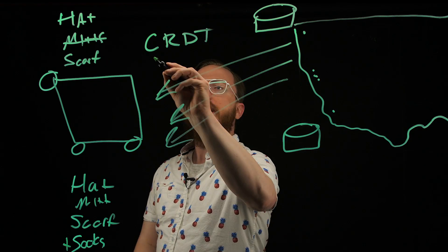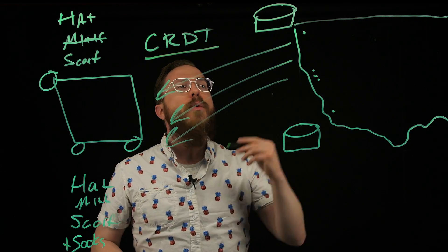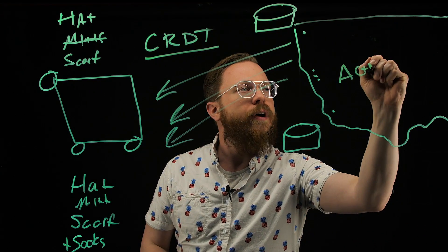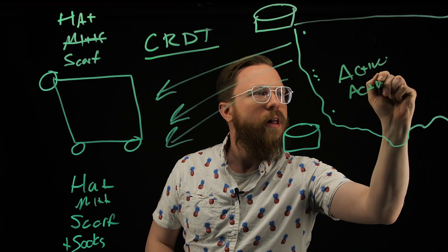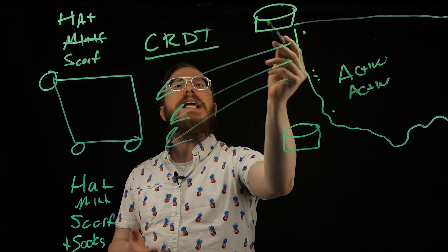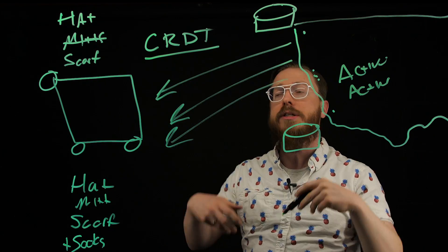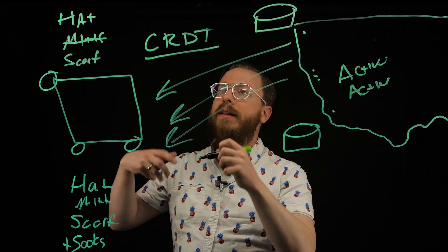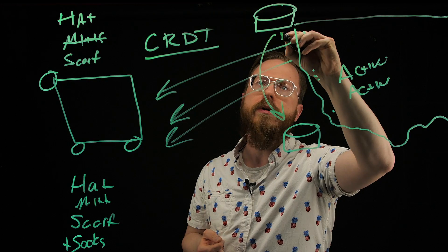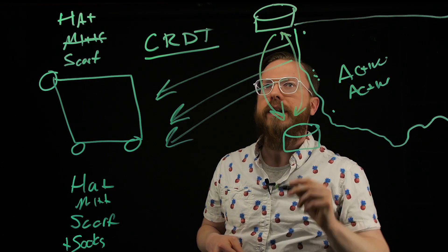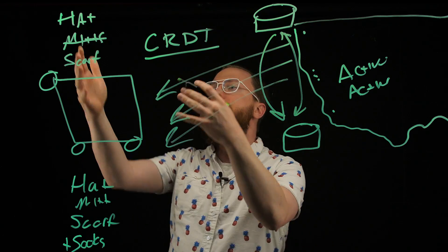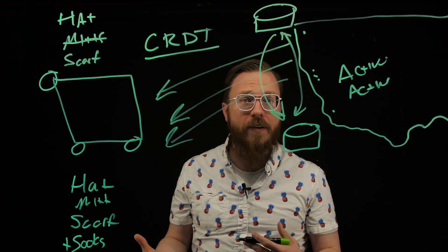So what CRDTs allow us to do, using that kind of methodology, is create an active-active cluster. An active-active cluster means that you can write to either one of these and the changes will be automatically reflected. When synchronization occurs between the two — which happens periodically — you're not overriding the entire thing. It enables you to do this automatically at the database level.